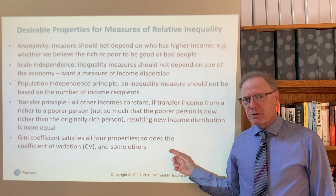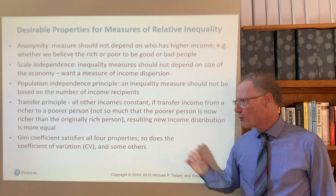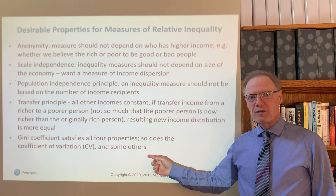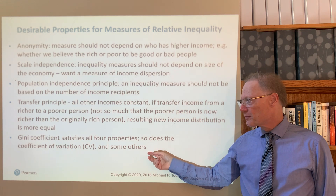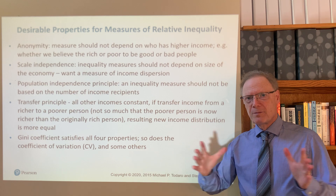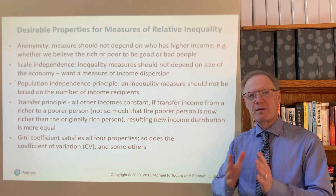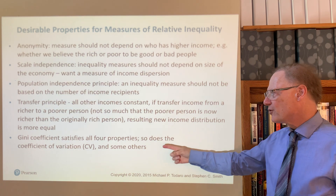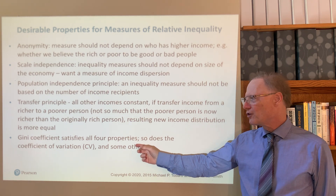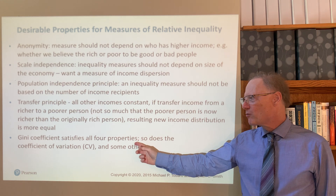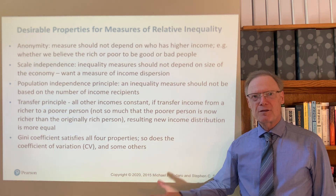Two measures of inequality that satisfy all of these properties are the Gini coefficient and the coefficient of variation. The coefficient of variation is simply the sample standard deviation divided by the sample mean — it indicates how dispersed the income distribution is, normalized by the sample mean. The Gini coefficient has a close relationship to the Lorenz curve. There are at least four ways of computing the Gini coefficient, but in this class we will focus on its relationship to the Lorenz curve.